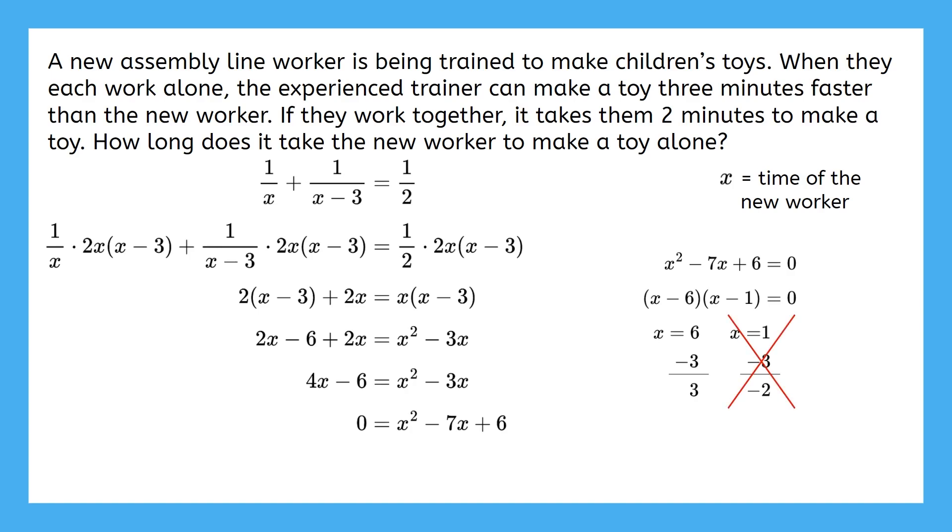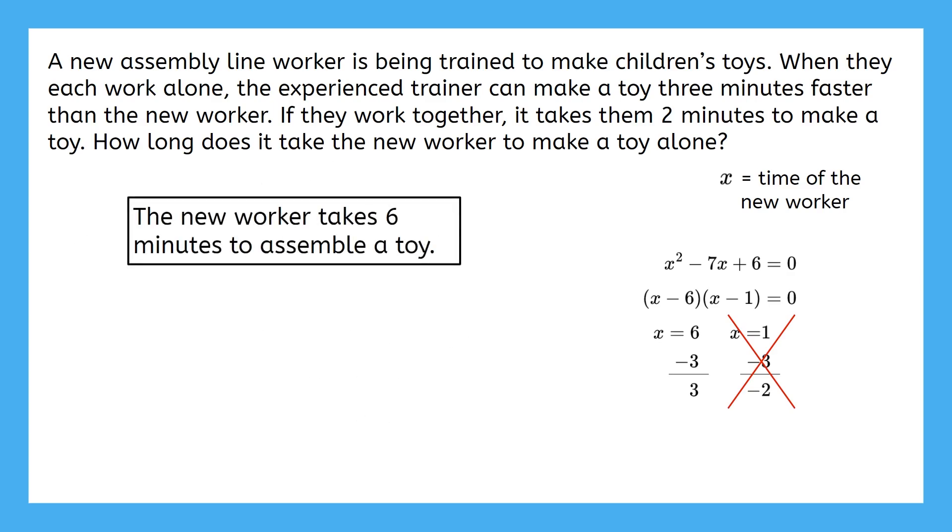Now let's make sure we're answering the question. Do we want to use six as our answer or three? Well, six minutes would be the time for the new worker, and three minutes would be the time for the experienced trainer. The question asked us how long it takes the new worker to make a toy, so we need to use the six for our answer.